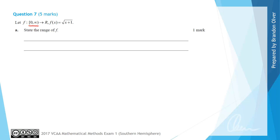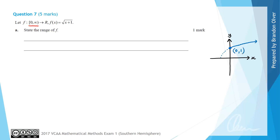For this question we are going to start by sketching a graph of f of x. If the function wasn't restricted, the square root of x plus 1 goes from negative 1 and has a square root shape going off to the right. However, due to the restriction of 0 to infinity, the graph only starts when x is 0. That endpoint is at the point 0 comma 1.